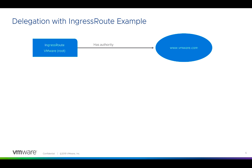Let's see how Contour solves this problem. Contour leverages the concept of delegation to safely satisfy ingress in a multi-team environment in a Kubernetes cluster. This delegation capability is implemented in the form of an ingress route CRD. The main concept behind this ingress route CRD is modeled after how things work in DNS. We have a root ingress route which has authority over vmr.com, and we can pass this authority over to other teams within the cluster.